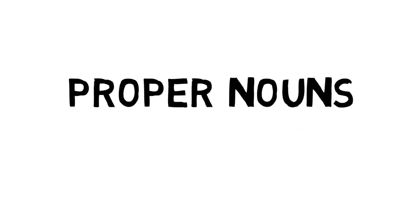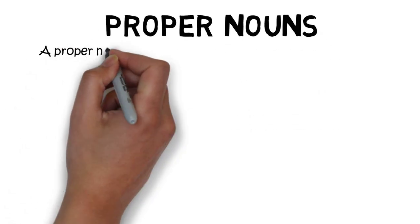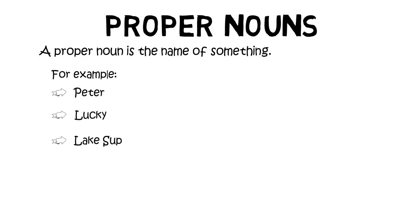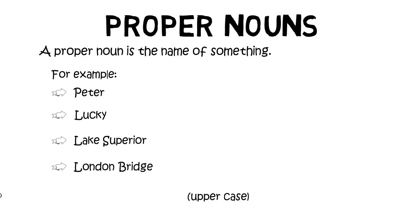So common nouns contrast with proper nouns. The proper noun is the name of something — the given name. So this will be clear from the examples: Peter, Lucky — as in the name of a dog or a cat — Lake Superior, London Bridge. These given names are written in uppercase, as you can see.